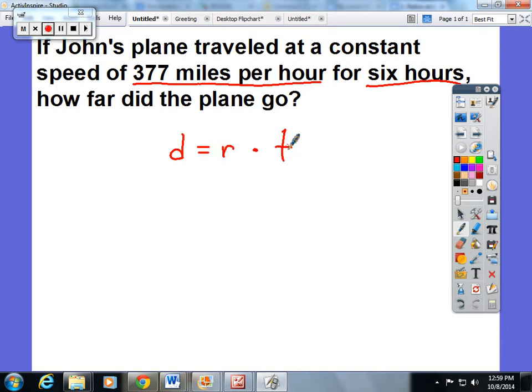So the students have to identify what pieces in their word problem are the distance, which ones are the rate, and which ones are the time. This is 377 miles per hour. It's a rate. It's comparing your miles to your hours.